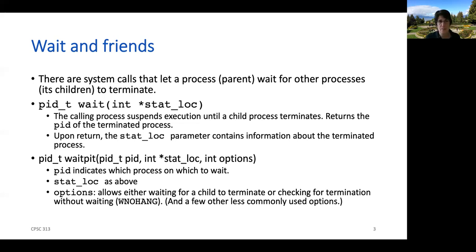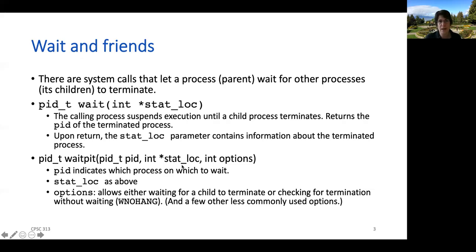Did the child exit successfully or not? `waitpid` is a way that we can wait for a specific process. Depending on what you specify for the pid parameter, you can wait on any process or a specific process, and we'll get the return value from the terminating process. If you've written programs, you might notice that you can say exit zero or exit one — that sets the exit status. We can return that value to a process that's waiting on it. The last parameter of `waitpid` lets you specify options, including whether the parent will wait for the child to terminate or only check if a child has already terminated.